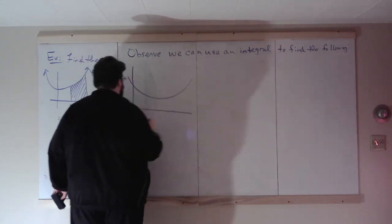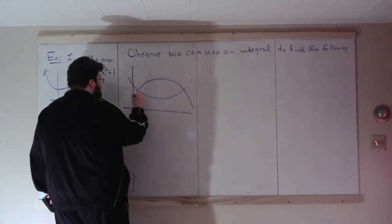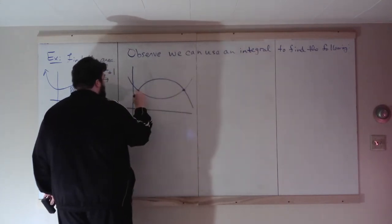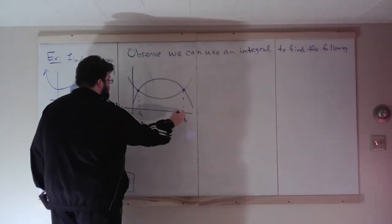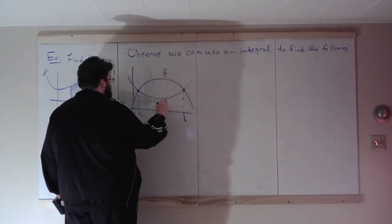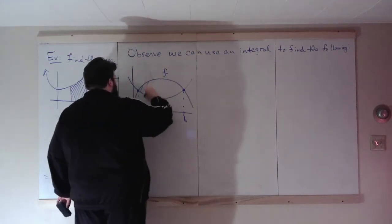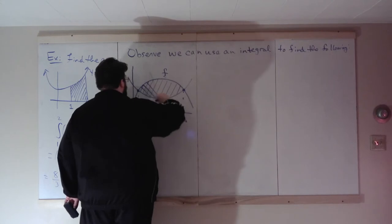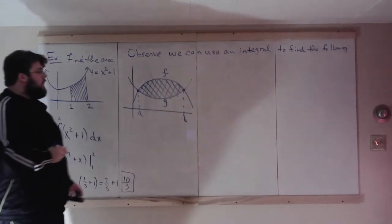Let's take two functions. Let's say they intersect at A and B. Let's call one F and let's call one G, both functions of x. Let's say we wanted to find this area. How can we find that area?